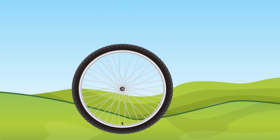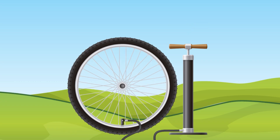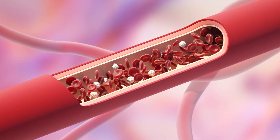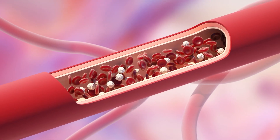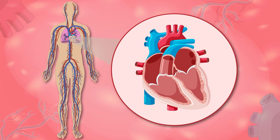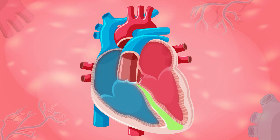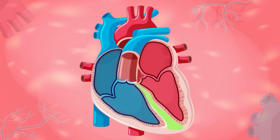Our heart is a type of pump, like the ones we use to inflate the wheels on our bikes. The only difference is that instead of pumping air, it pumps blood. The heart is divided into two parts — the right part and the left part — separated by a cellular wall so they are not connected internally.